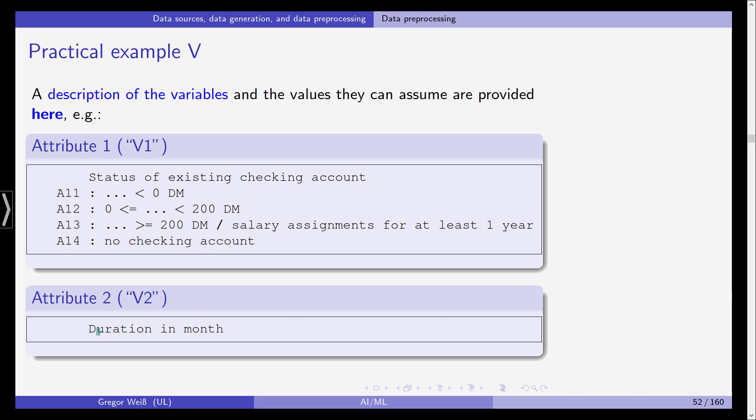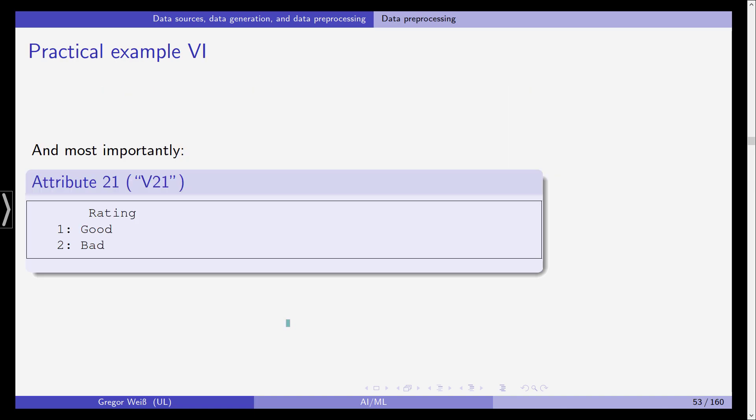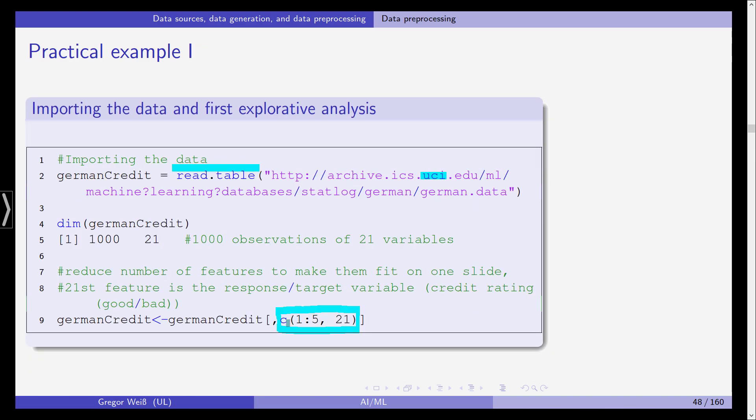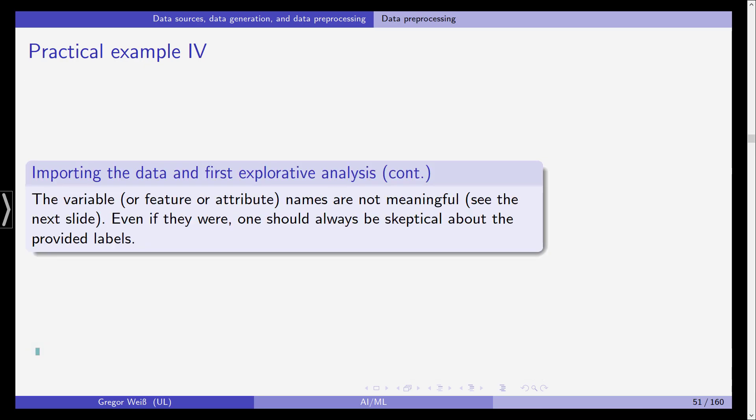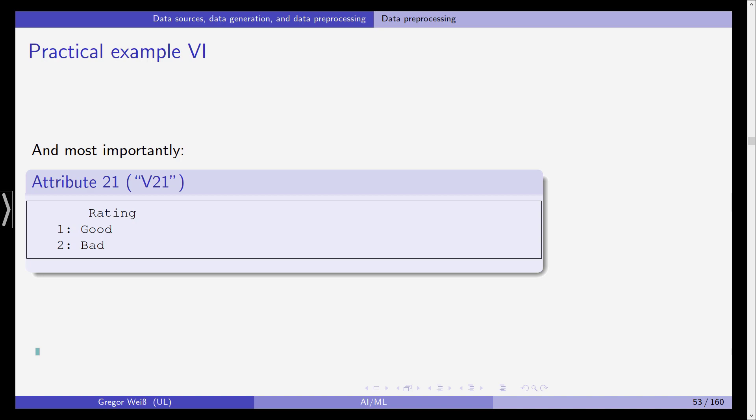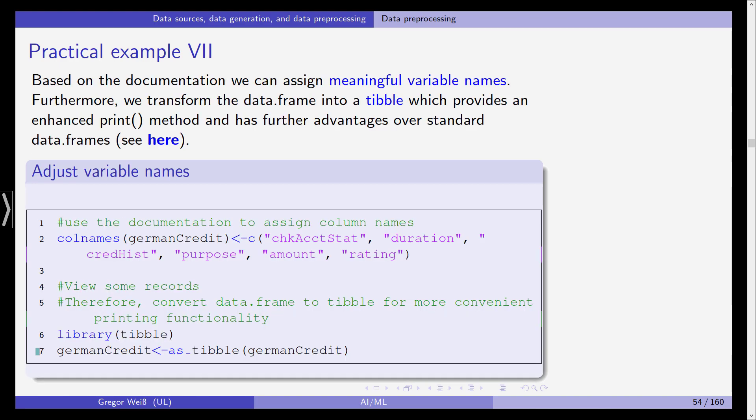Level three is above 200 Deutschmarks or salary assignment for at least one year. The fourth level is that this customer doesn't have a checking account. The second attribute is the duration in month. If we switch to attribute 21, the last variable we cut out, this is V21, the 21st column. This is actually the rating. One is good, two is bad.